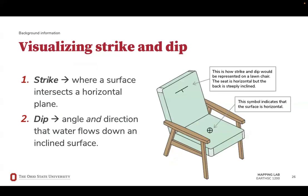To help visualize strike and dip using a familiar object: this is how strike and dip would be represented on a lawn chair. The seat of the lawn chair is horizontal, so you would use a horizontal symbol to indicate a horizontal rock layer. The back part of the chair is steeply tilted, and we would see that represented with the strike and dip sign, indicating that this rock layer is steeply inclined.